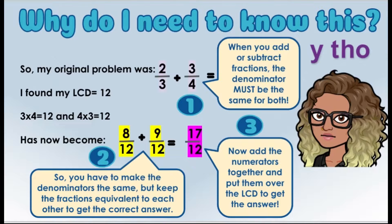We wrote our number sentences: three times four equals 12 and four times three equals 12. We took the factor that was multiplied by the original denominator and multiplied it by our original numerator, giving us the new fraction set of eight-twelfths plus nine-twelfths. We made the denominators the same and changed the numerators to keep the fractions equivalent. With adding fractions, all you have to do is add the numerators together and put them over the LCD to get the correct answer.